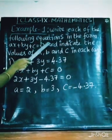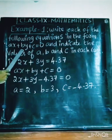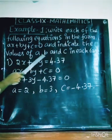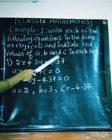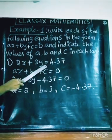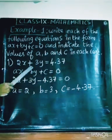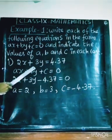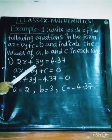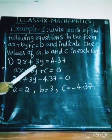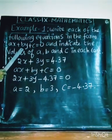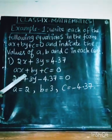So up to this the introduction is clear. Now, the exercise: Write each of the following equations in the form AX plus BY plus C equal to 0, and indicate the values of A, B, and C in each case. Subdivision 1: 2x plus 3y equal to 4.37. We have to write the given equation in general form AX plus BY plus C equal to 0.